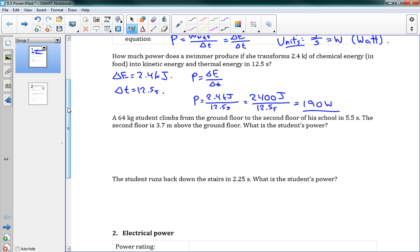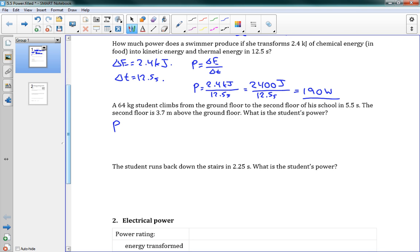We have another problem here. A 64 kilogram student climbs from the ground floor to the second floor of his school in 5.5 seconds. The second floor is 3.7 meters above the ground floor. What is the student's power? How much power is used to change that energy? Change in time is 5.5 seconds. We know that he's changing gravitational potential energy. We have the final gravity minus the initial gravitational energy.